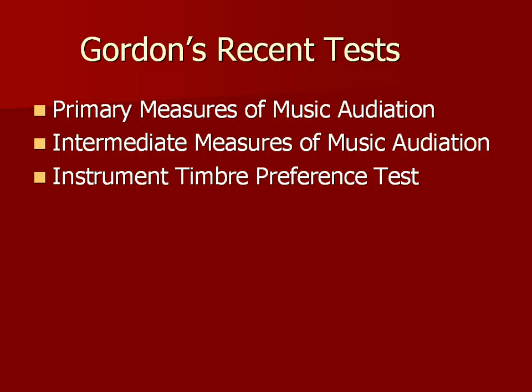In the 1970s and 80s, Gordon developed additional tests. One was the Primary Measures of Music Audiation for younger children, then the Intermediate Measures of Music Audiation for slightly older children, and finally an Instrument Timbre Preference Test meant to help students choose an instrument. The Musical Aptitude Profile was designed for fourth grade and older students. Gordon believed fourth graders had relatively stable musical aptitude — it had stopped fluctuating by that point. The Primary Measures are given to younger children, perhaps four-year-olds, and the Intermediate to second and third graders.